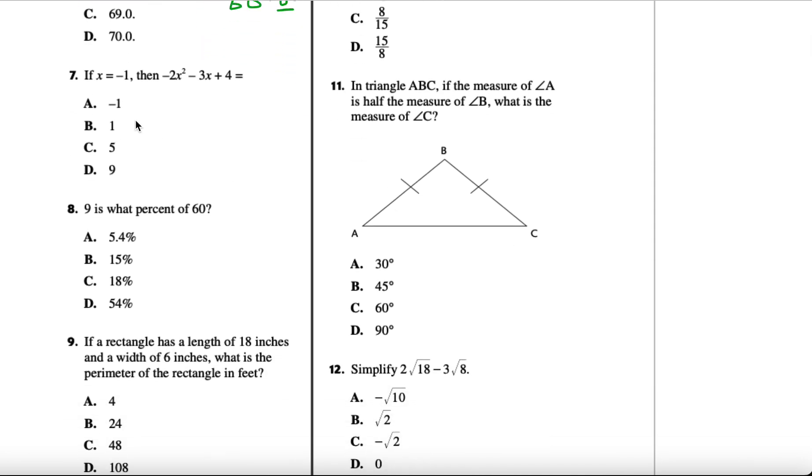Number 7: if x equals negative 1, then negative 2x times negative 1 squared minus 3 times negative 1 plus 4. We see that negative 1 squared is positive 1, times negative 2 is negative 2. Then negative 3 times negative 1 is plus 3. So we have negative 2 plus 3 plus 4. Negative 2 plus 3 becomes 1, and 1 plus 4 is 5. So C is our answer.